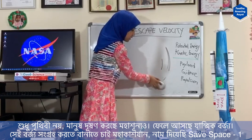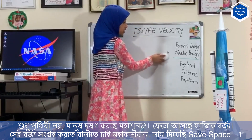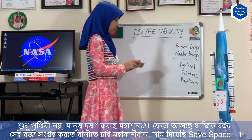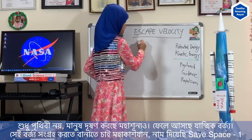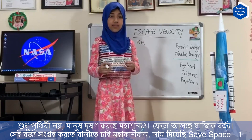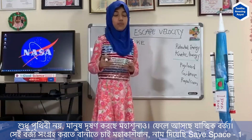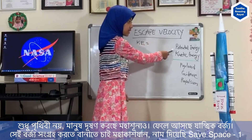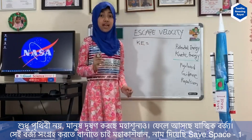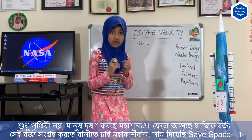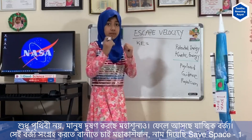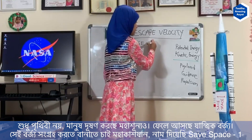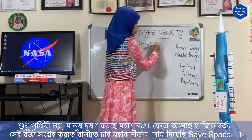Now that we know about escape velocity, let me come up with the equation. The kinetic energy is when an object is moving — that is called kinetic energy. The potential energy is a stationary energy: it also has energy but the object is staying still, not moving. This is called potential energy.